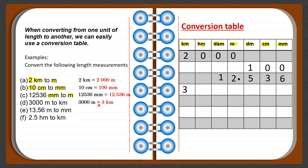When you have a decimal number as the given value, the decimal point is always placed in the position of the given unit. Here the given unit is meter, so the decimal point is put in the meter column. Then we fill in the digits — whole numbers and decimals — according to their place values. For example, the 3 is in the ones place, 1 is in the tenths, and the next digit is in the hundredths.